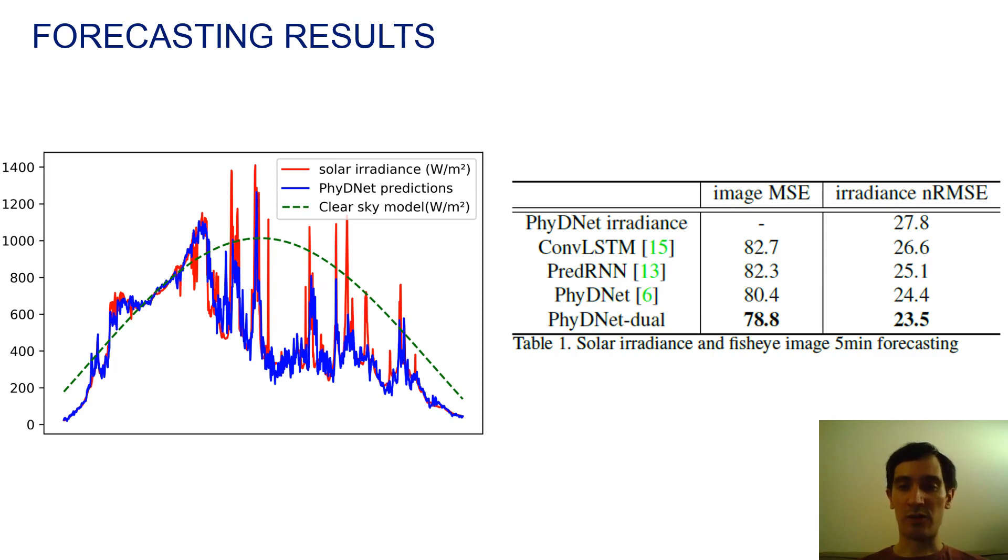...you can see the table that shows quantitative results with respect to competitive baselines, ConvLSTM, PredRNN, and PhyDNet. We see that our PhyDNet Dual model has the best performances with respect to all baselines, both in terms of image prediction and in terms of irradiance prediction.